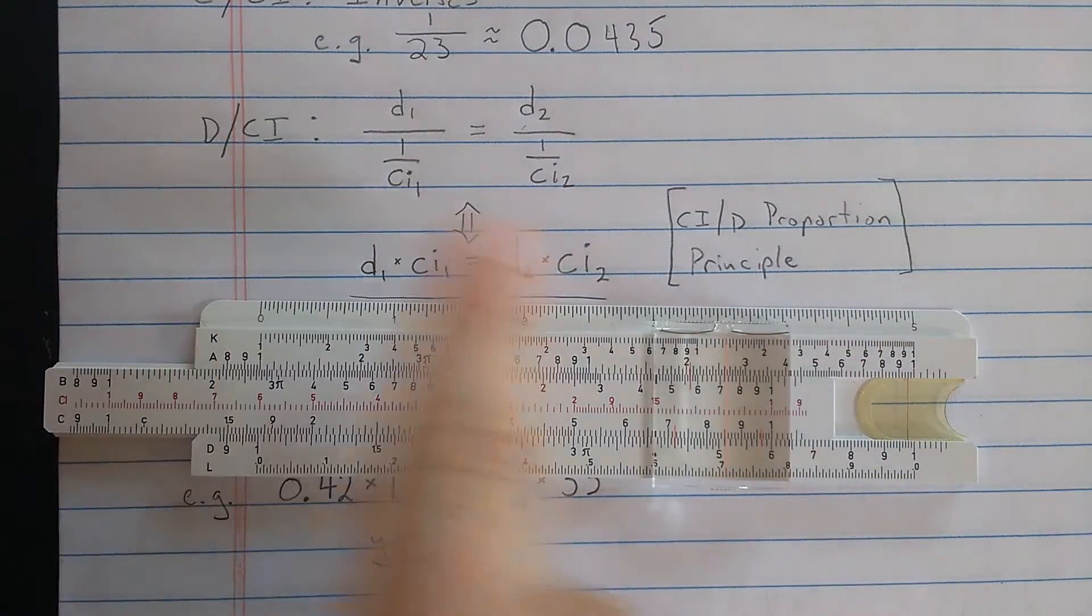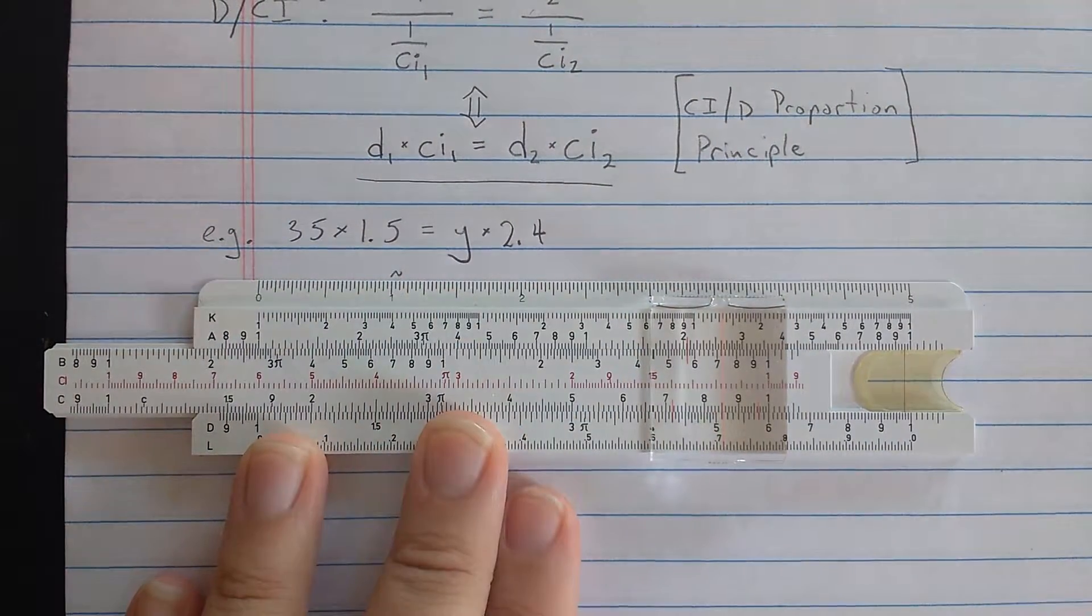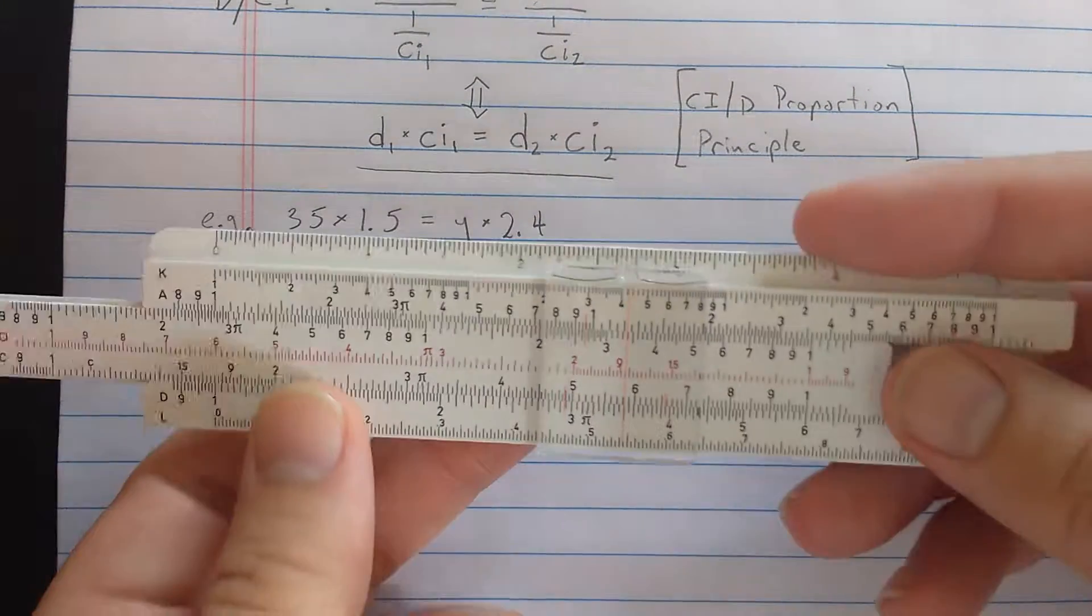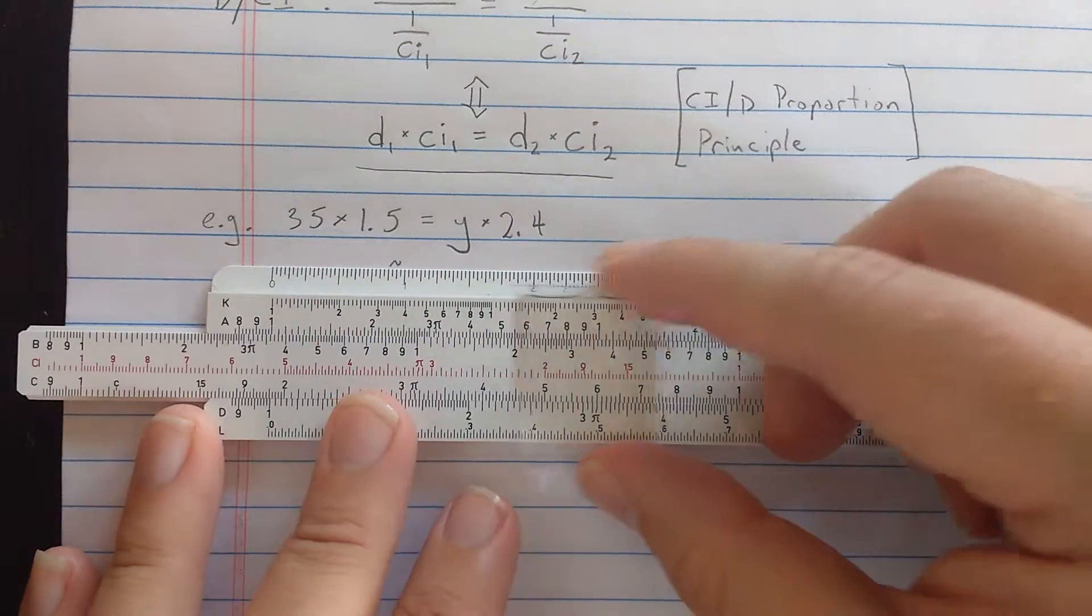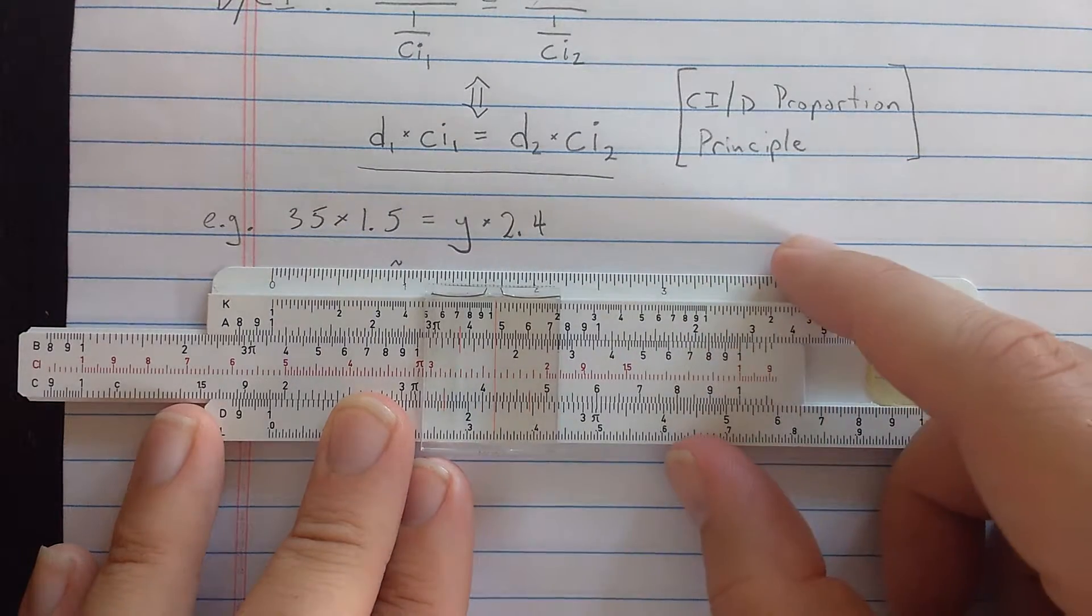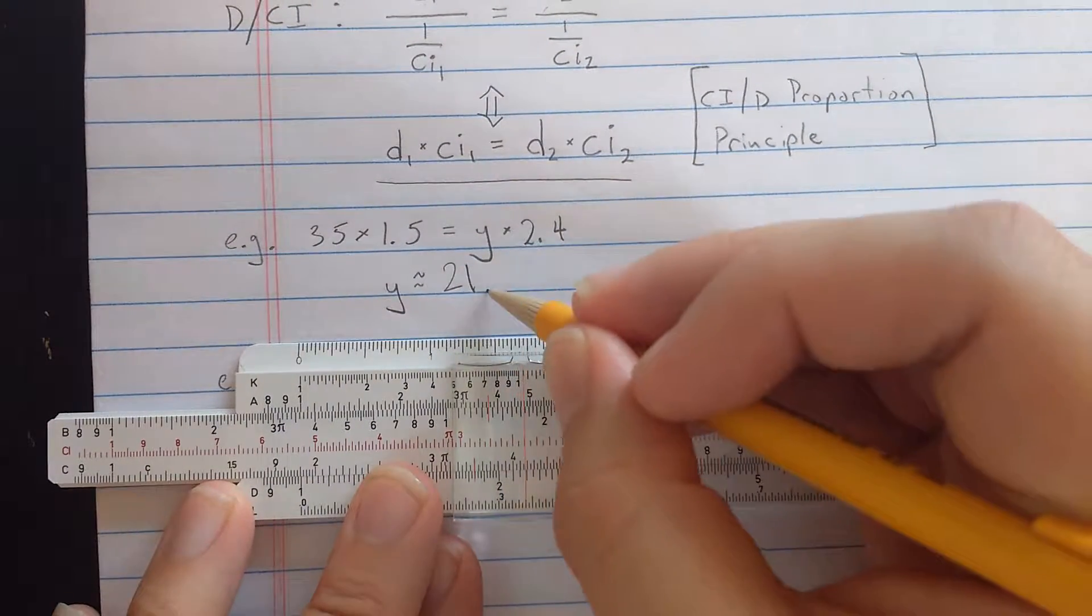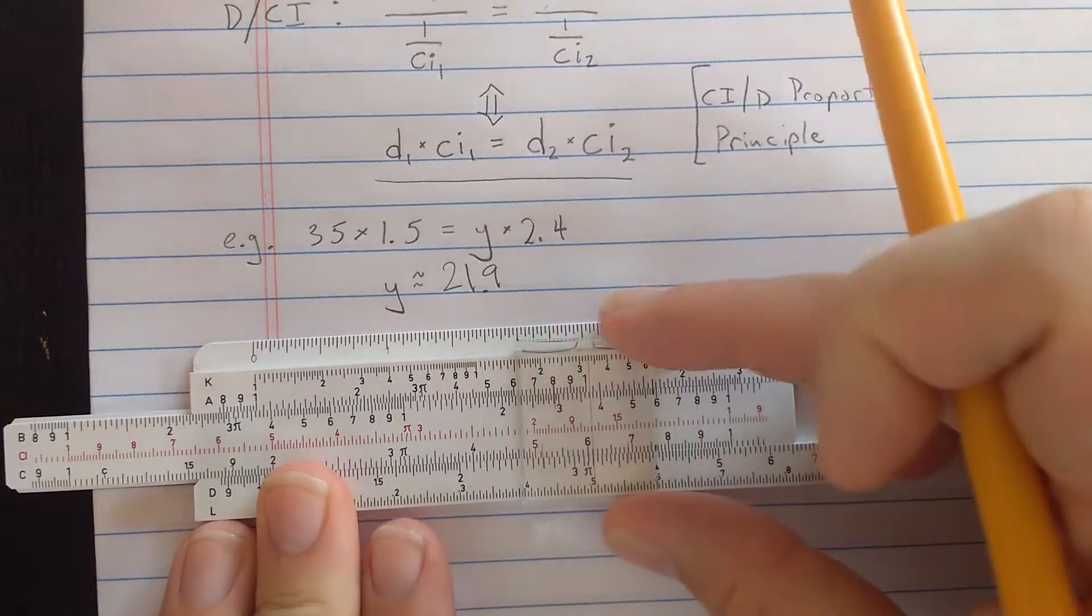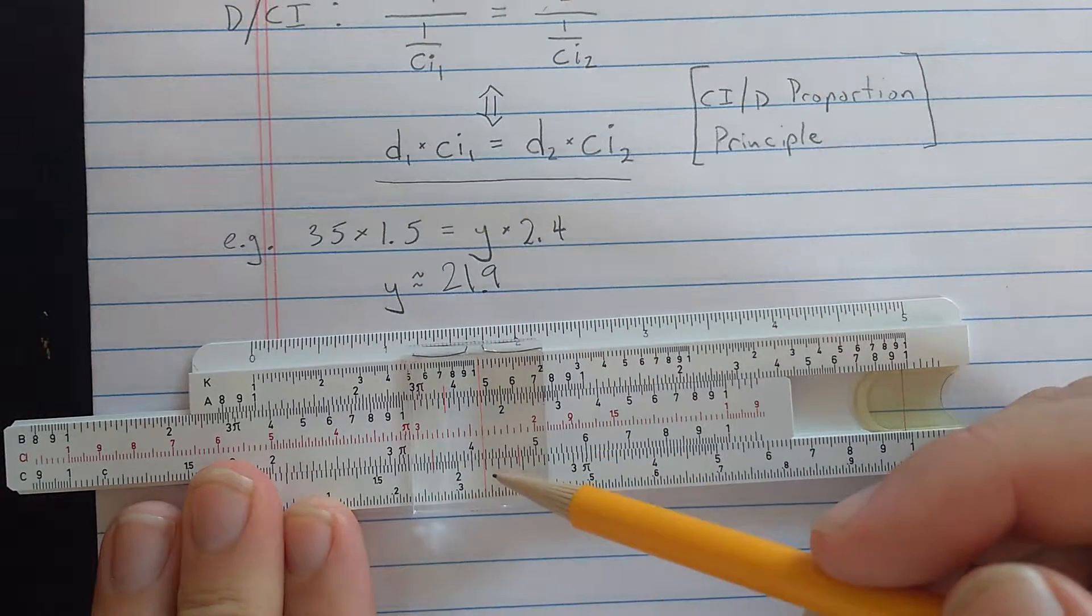Okay, so we're going to call this the D slash CI proportion principle. Let's use this to solve a couple proportions. So say you have 3.5 times 1.5 as something times 2.4. You could find the 3.5 on D, find the 1.5 on the CI scale. Okay. And now if you found the 2.4 on the CI scale, on the D scale, you would read the results. So now finding 2.4 on CI, I read down there about 2, 1, about 2, 19. And interpreting the decimal place here, 21.9. So what I did was, here I said, okay, well, I'll set 35 times 1.5 here. And then if I set 2.4 here, what is the other number I need for that product? 21.9.